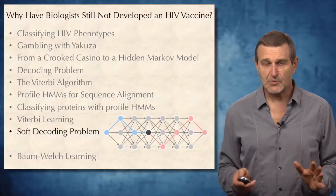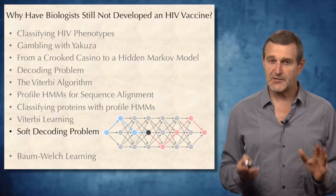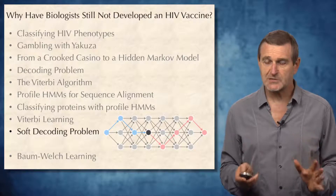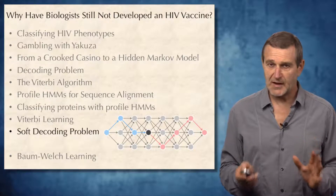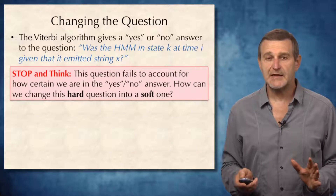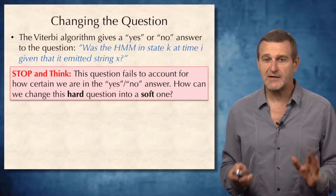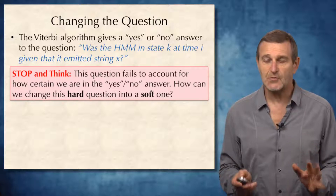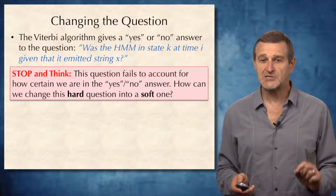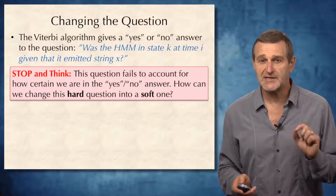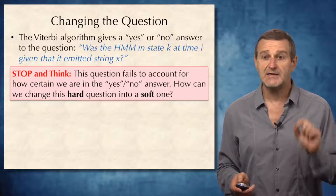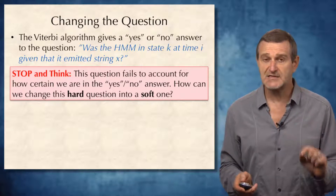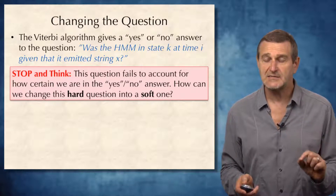To develop a better approach to the parameter learning problem, we need to develop a new version of the Viterbi algorithm. As we discussed, the Viterbi algorithm gives a yes or no hard answer to the question: was the HMM in state k at time i, given that it emitted the string x?